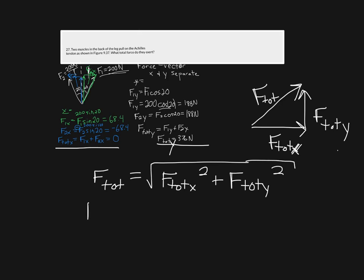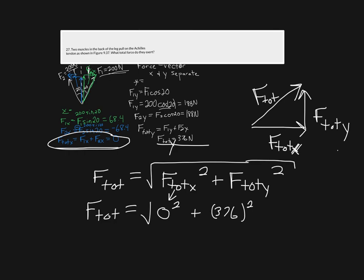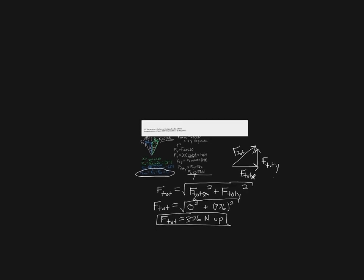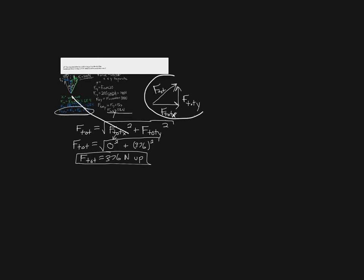Plugging in the values: F_total equals the square root of 0 squared plus 376 squared, because there was no force in the x direction. Taking the square root gives F_total equal to 376 Newtons, acting entirely in the upward direction. If there had been an x-component as well, I could find the direction from the triangle — the angle theta where the tangent of theta equals F_total_y divided by F_total_x.